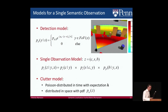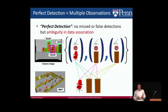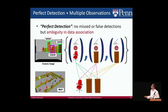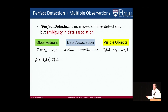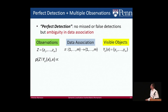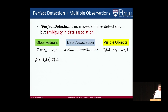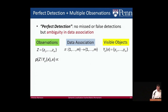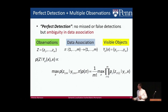Next, we combine this into a model for multiple detections. Assuming perfect detection — no missed or false detections — the only problem is ambiguity in data association. The visible objects around the robot and the detections form two sets of the same cardinality. A data association is then a mapping from the set of visible objects to the observations. If we condition on the correct data association, we can simply take the product of single detection models. One approach is to find the most likely data association, but this is not proportional and not the correct way to compute the likelihood. What we should do is marginalize over all data associations using the law of total probability.